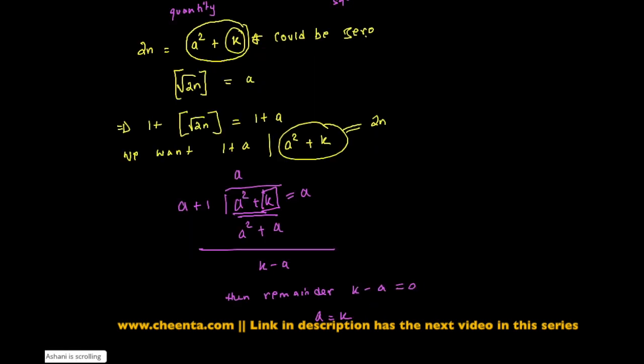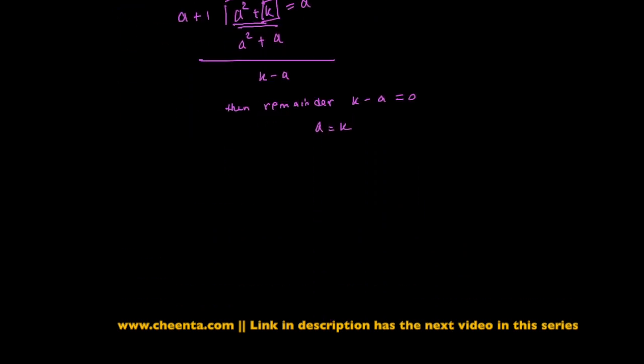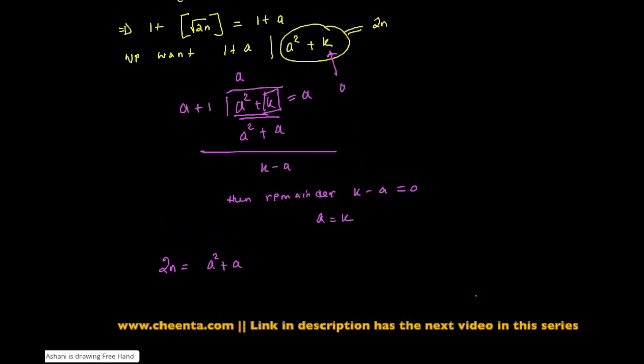We are done almost because then we found that 2n is equal to a square plus a, because this k we found to be a. And this implies n is equal to a square plus a by 2, which implies that this is a into a plus 1 by 2.